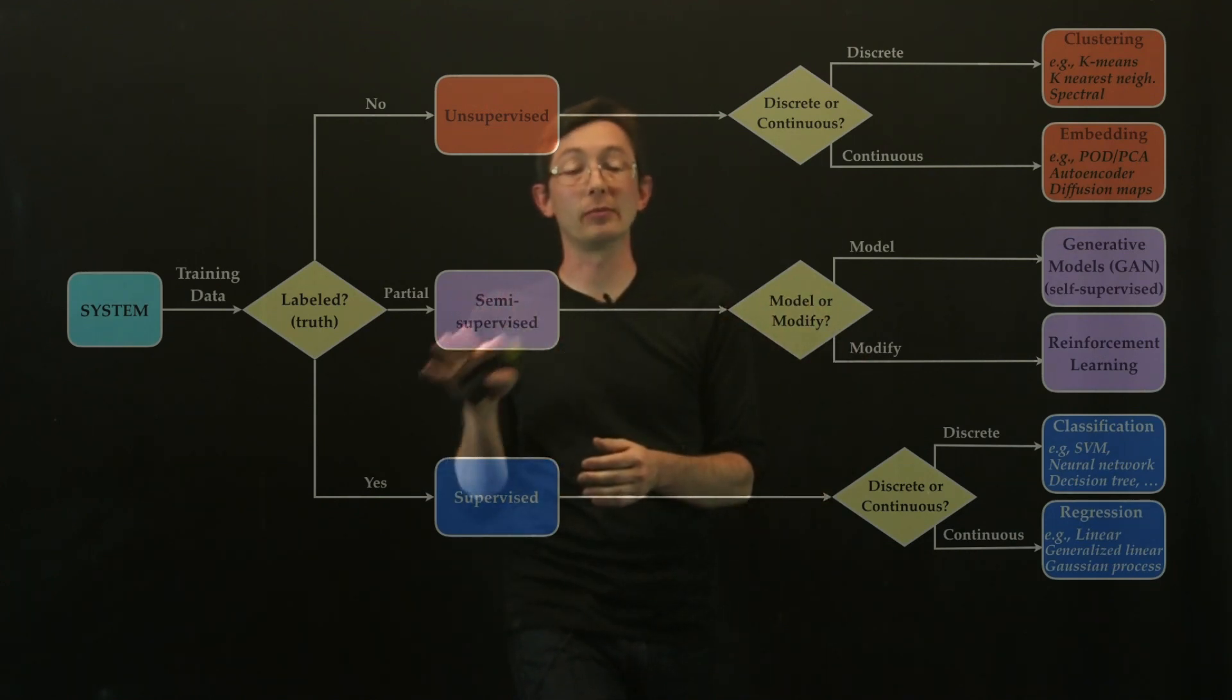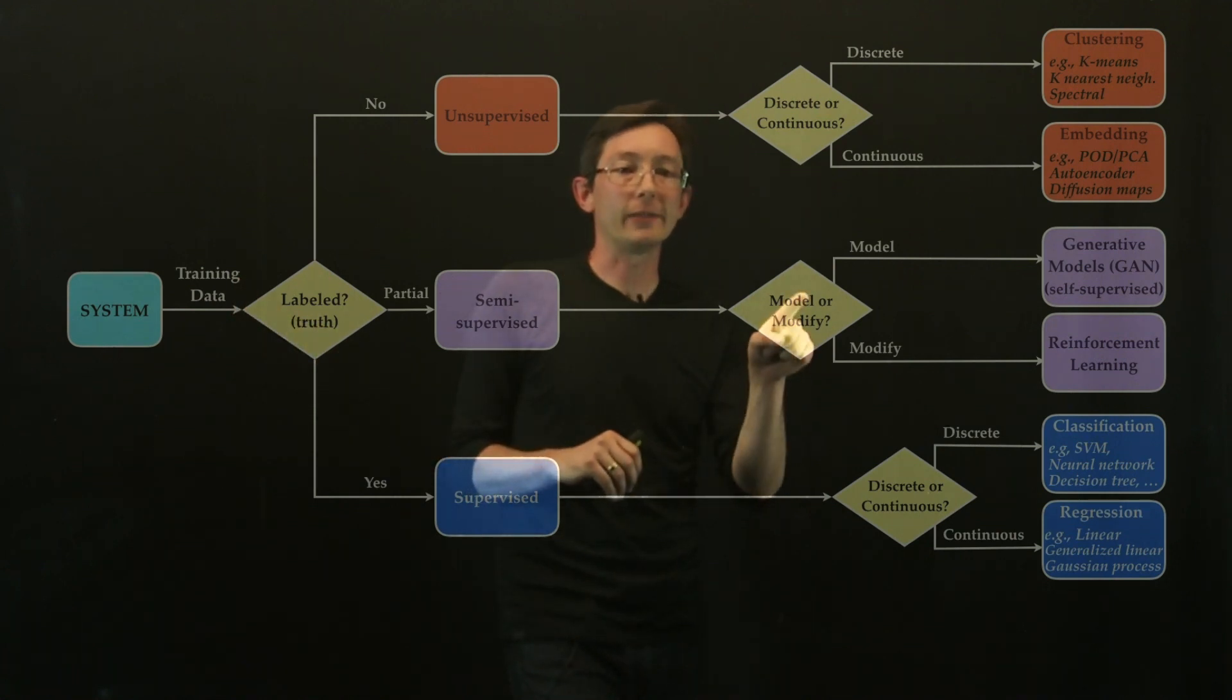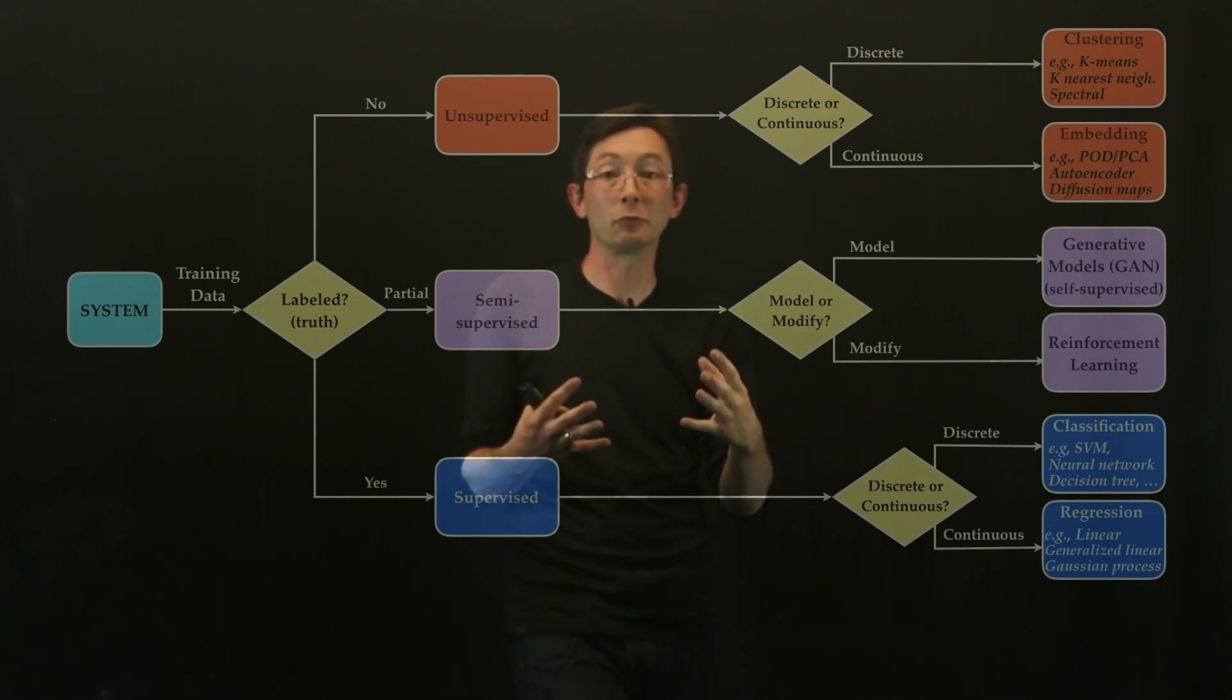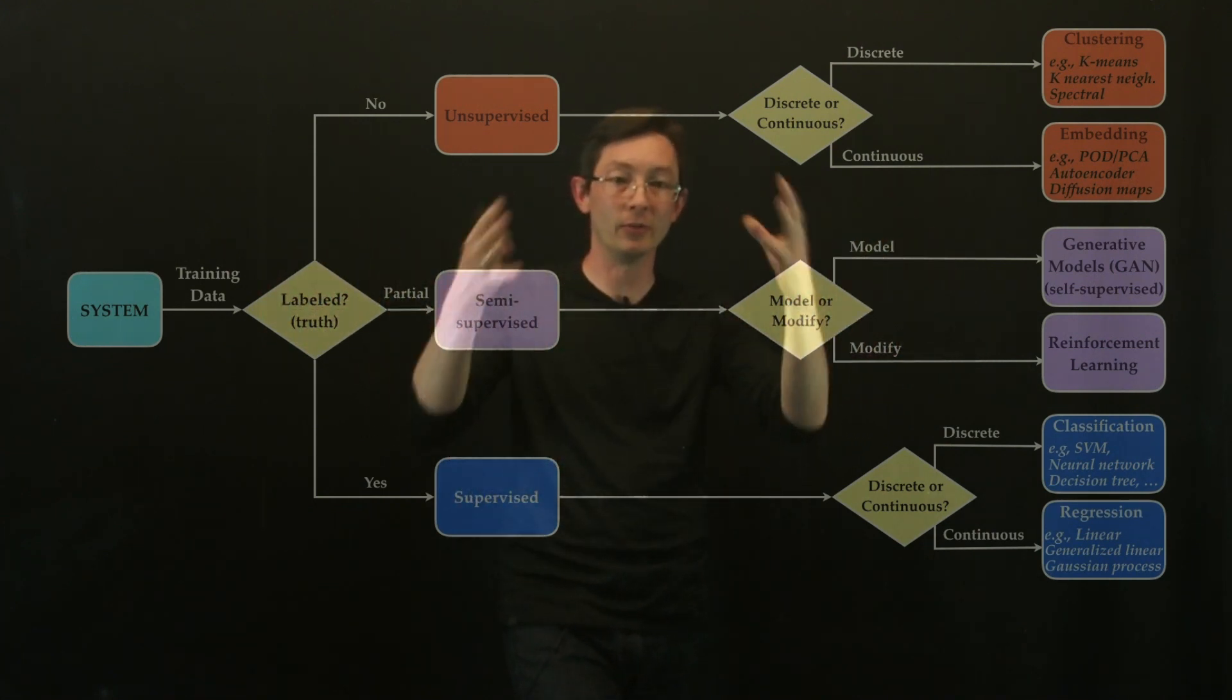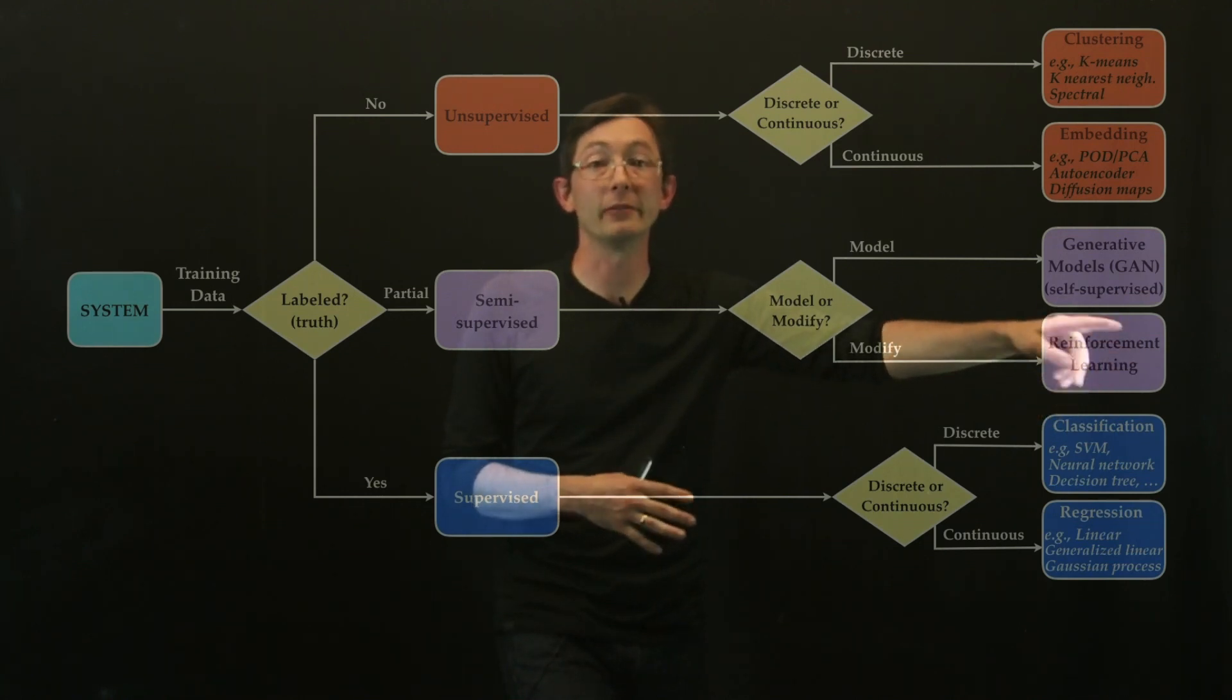And it started off probably with some partial labels from the true system though. Now if I want to actually modify my system through feedback control or if I have a robot that's actually in the world doing stuff and it changes the world, this would be a branch called reinforcement learning.